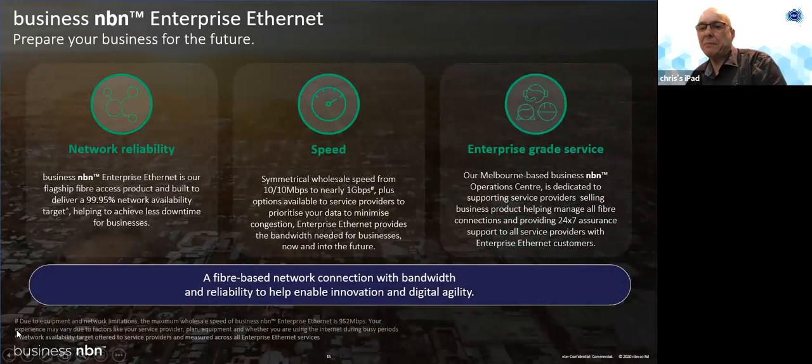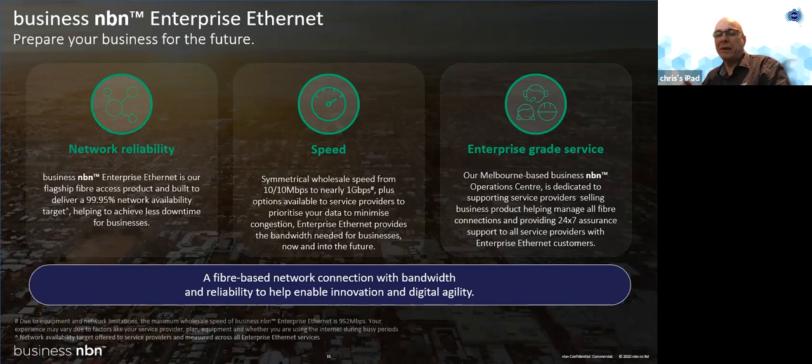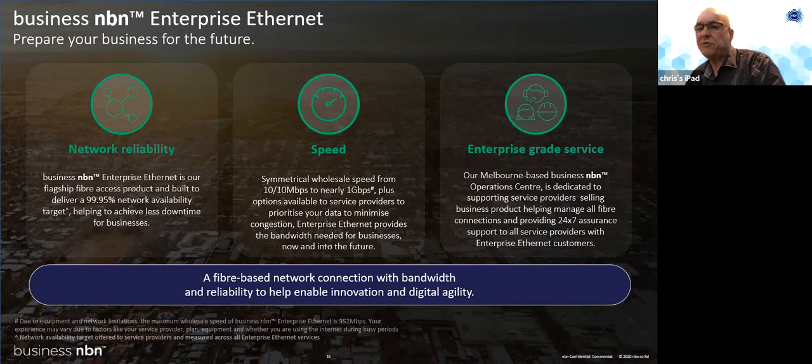I just wanted to touch on enterprise Ethernet, which is really the service that you take up in these business fibre zones. It is our flagship business grade product. It is a dedicated fibre service to your premises. We build it on demand. It's different to our fibre to the premise network. It's got a higher level of reliability at 99.95% available. It supports symmetrical speeds, so the uplink and the downlink speeds are equal. It starts at 10 megabits per second and goes up to nearly one gigabits per second, symmetrical. It's also supported by our Melbourne based operation centre, 24 hours a day, seven days a week.